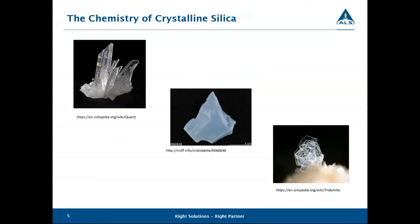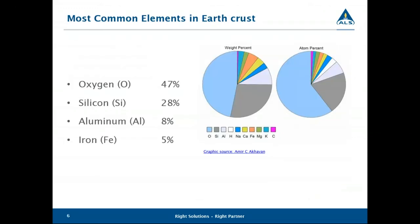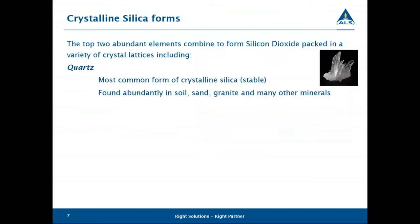So what is crystalline silica? Oxygen makes up approximately 47% of the Earth's crust abundance, and the next most abundant element is silicon. These two combine to form silicon dioxide, which is the basic building block of the crystalline silica lattice. There are quite a number of different polymorphs, but from an industrial standpoint we focus on three primarily. The most abundant is alpha quartz, commonly found in soil, sand, granite, and a variety of different minerals.